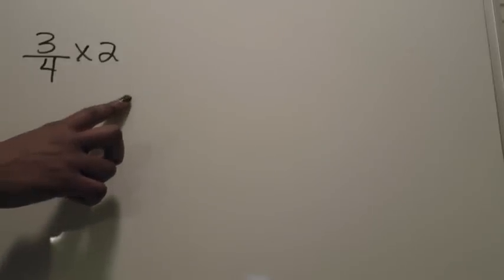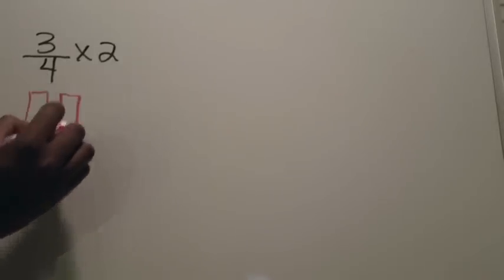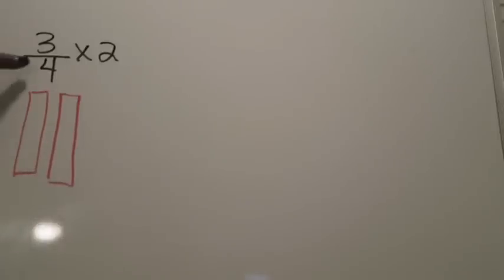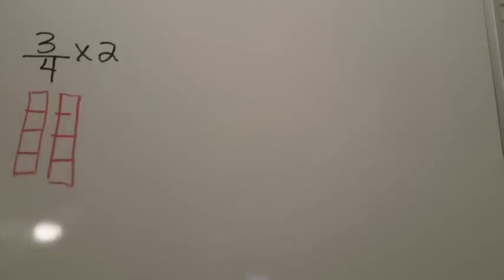Here's our second example: we're going to take 3/4 and multiply that by 2. Notice the whole number is on the other side of the multiplication sign — that does not change how you complete the problem. We go back to reading each part: we have 2 wholes, so we draw out two whole pieces. Then the denominator tells us to divide each whole into four equal parts, so I divide each of the two wholes into fourths — one, two, three, four for each.